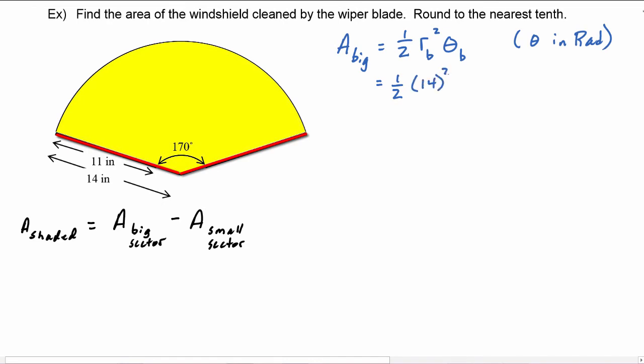Now we do need theta to be in radians. So we know that theta is 170 degrees, and we're going to need to multiply by a conversion factor of π over 180 degrees. So we see that theta is going to be 17π over 18 once we put that into radians. So now we can bring that into our equation.